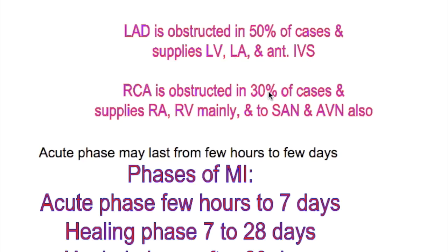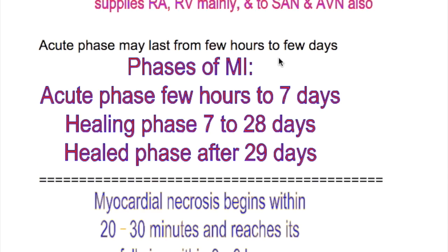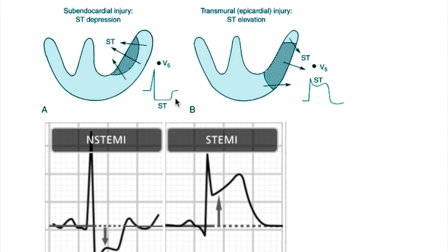The right coronary artery is obstructed in 30% of cases and supplies the right atrium, right ventricle mainly, and also the SA node and AV node. The phases of myocardial infarction are: acute phase lasting from a few hours to seven days, healing phase lasting from seven days to 28 days, and healed phase after 29 days.